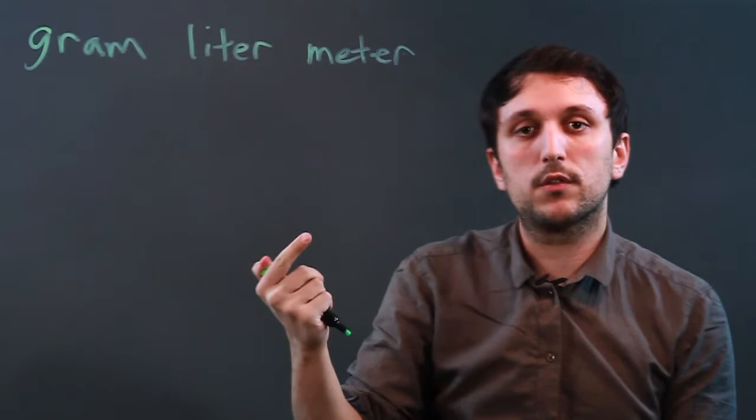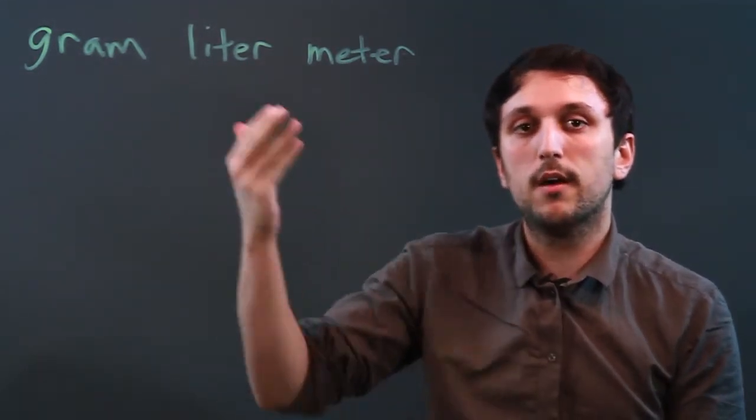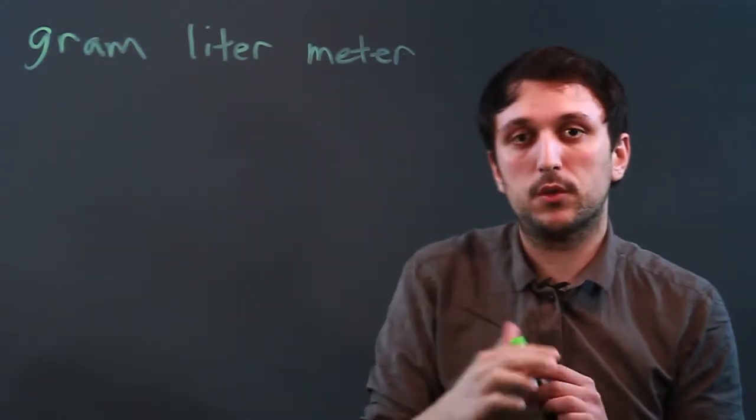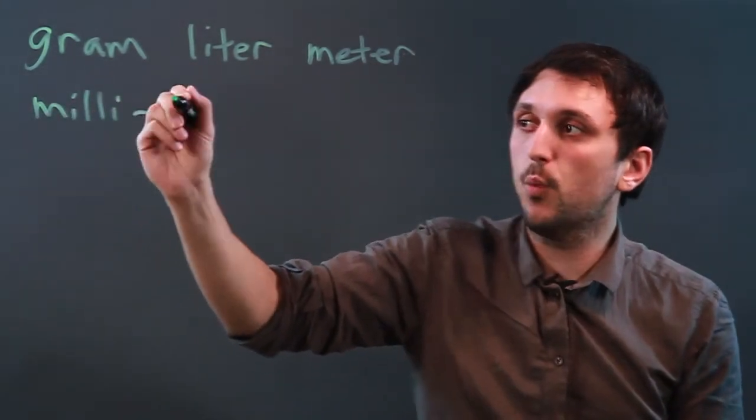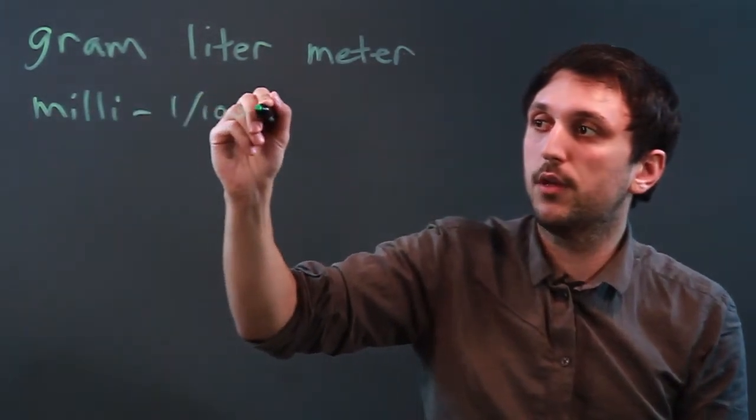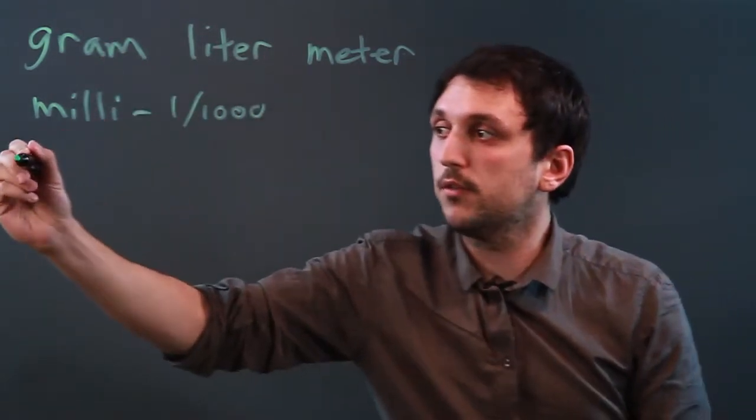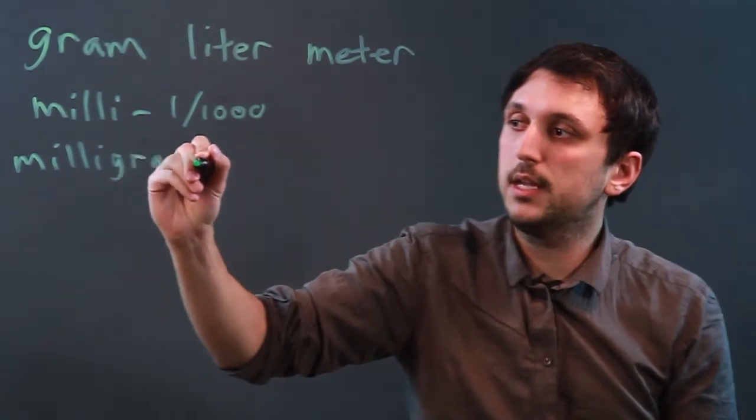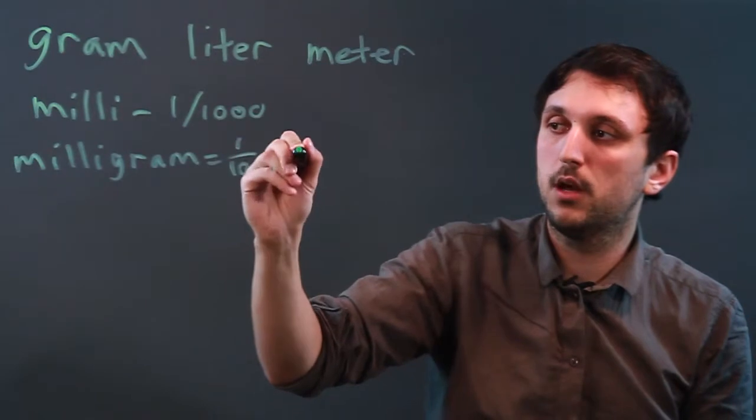Now, with the metric system, we use prefixes to distinguish between fractions of a gram or a liter or a meter and multiples of one. So the prefix milli means one one thousandth, and it doesn't matter if it's a gram or a liter or a meter. If we say milligram, that equals one one thousandth of a gram.